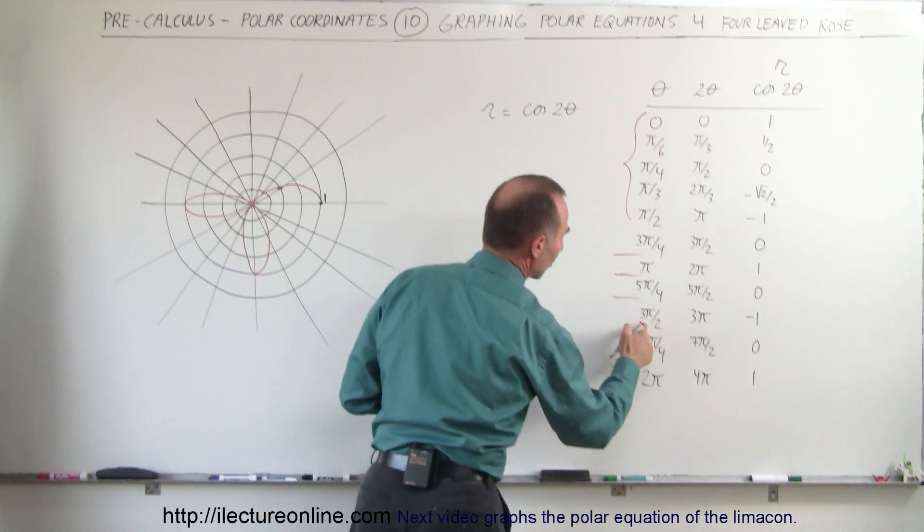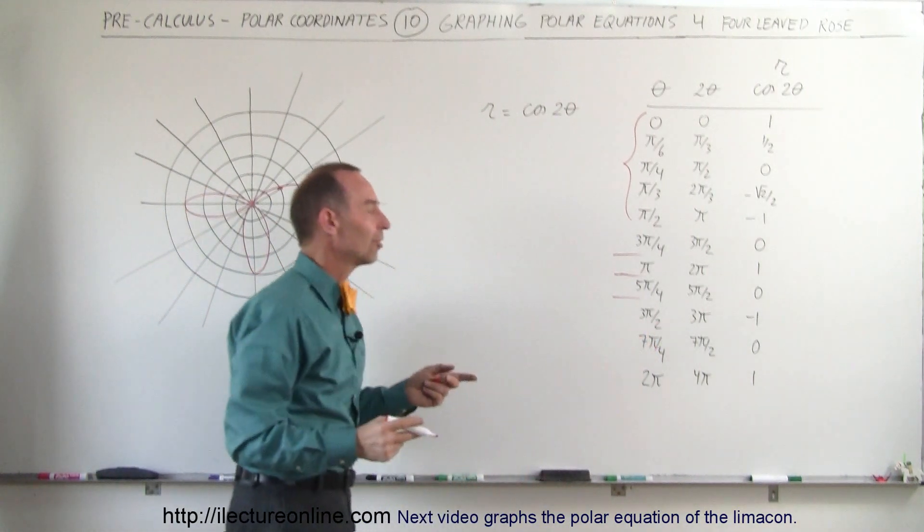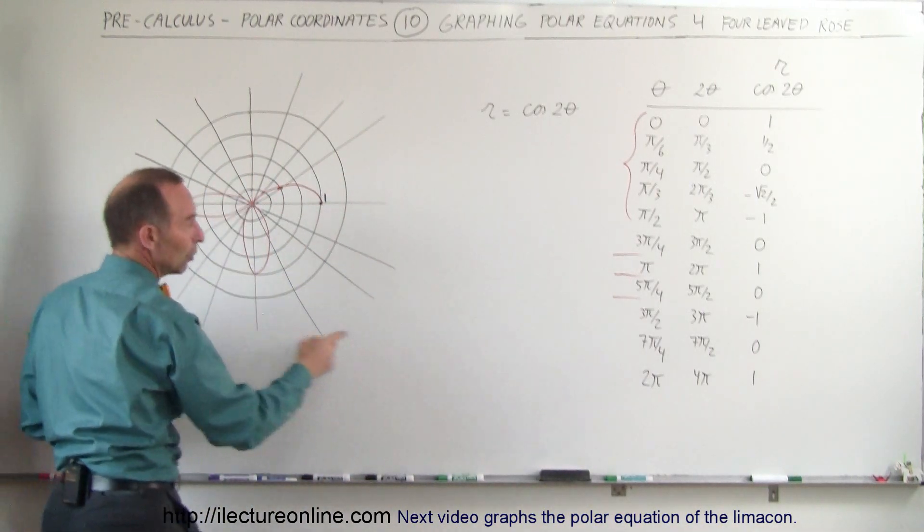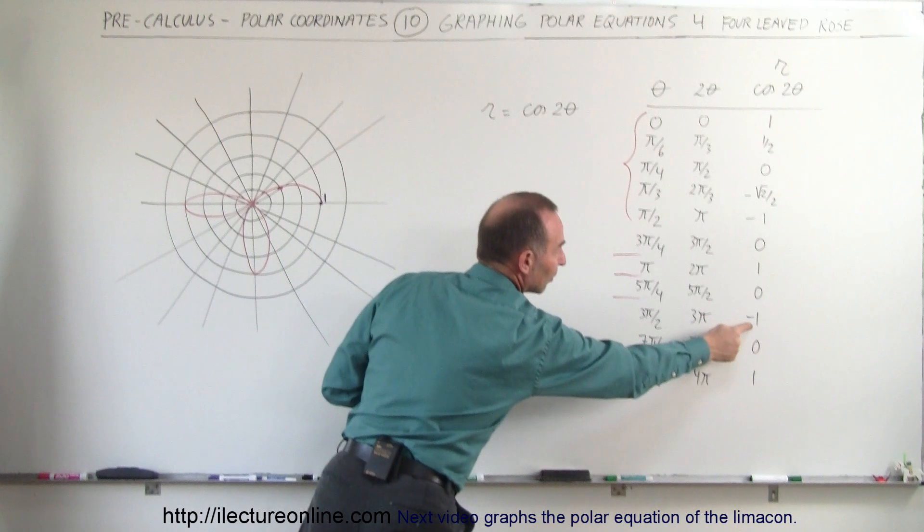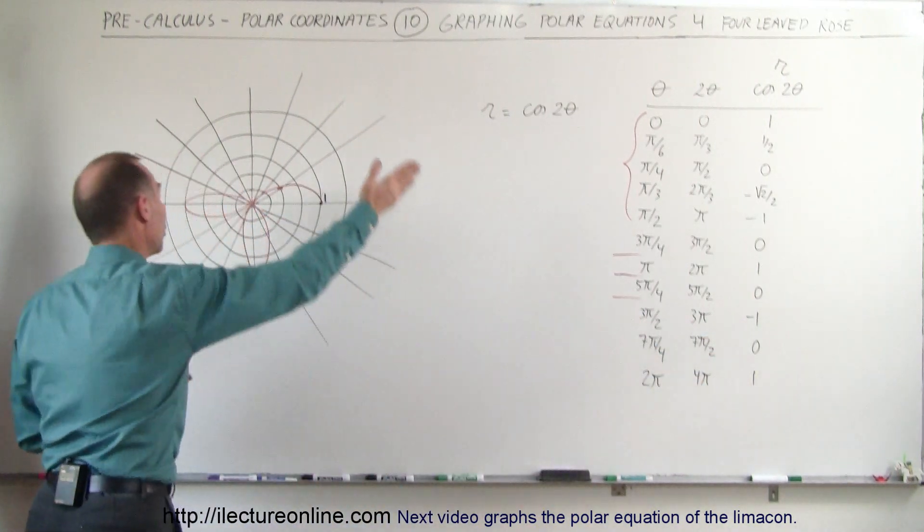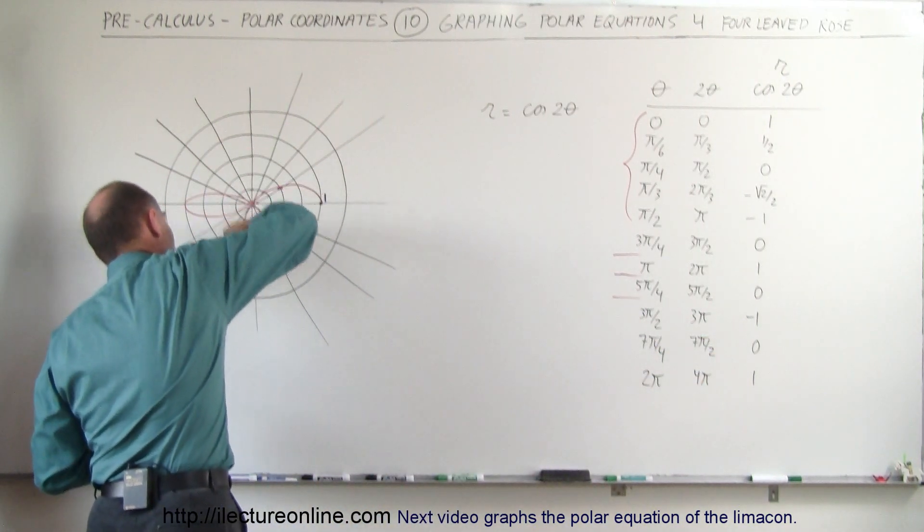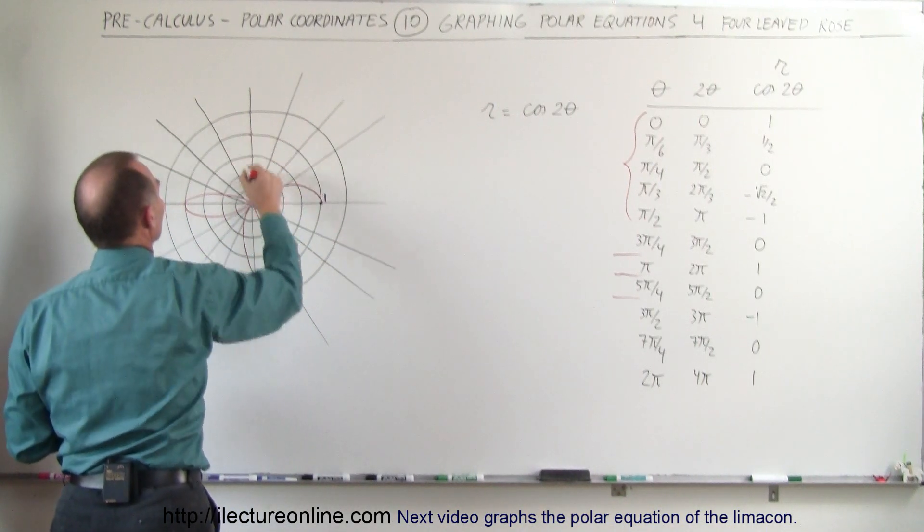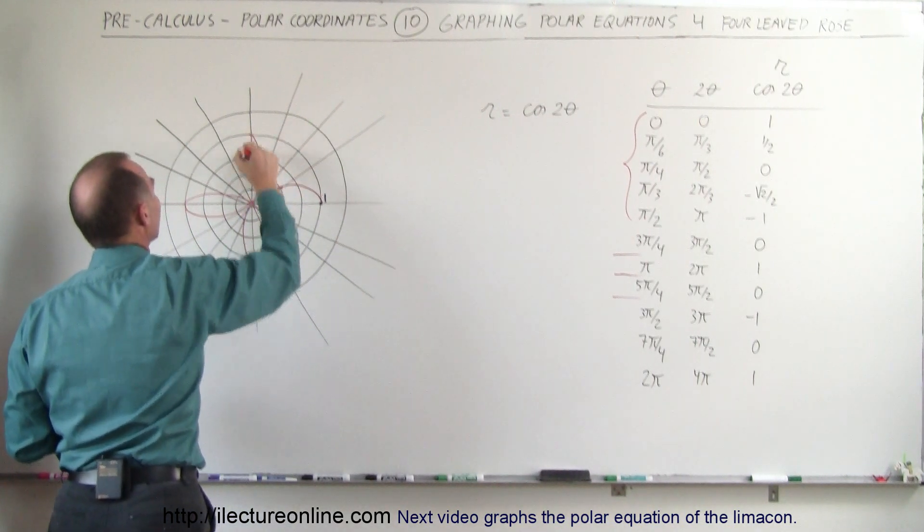Now we're over here at 3 pi over 2. So what is that? That's 270 degrees. So now we're facing downward, but notice then the distance is a minus 1. So even though we're now 270 degrees in this direction, we have R equals negative 1. That puts us back over here. That means the graph continues on like this.